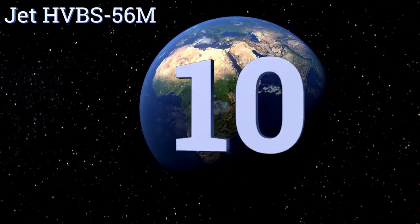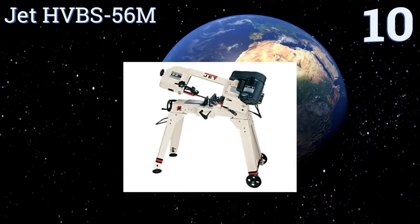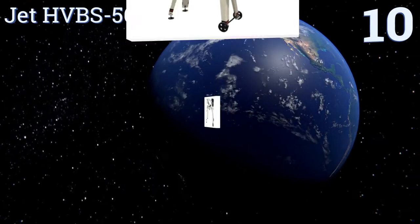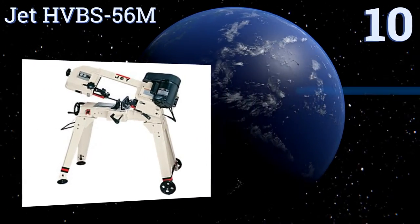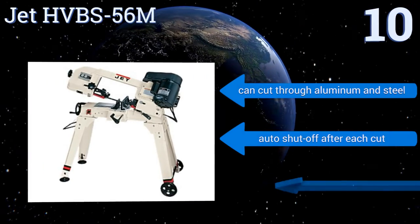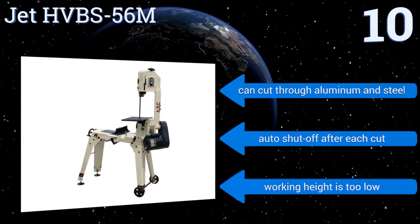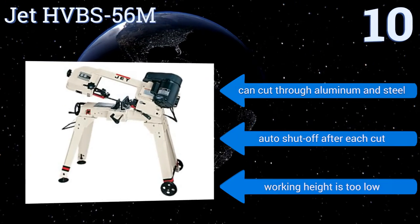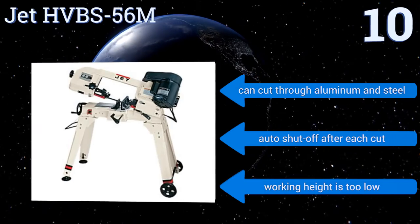Starting off our list at number 10, get the job done quickly and efficiently with the Jet HVBS-56M, which is equipped with adjustable leveling pads and a high-capacity swiveling vice to hold your workpiece. It features a handle and large rear wheels for easy movement. It can cut through aluminum and steel and automatically shuts off after each cut. However, its working height is too low.